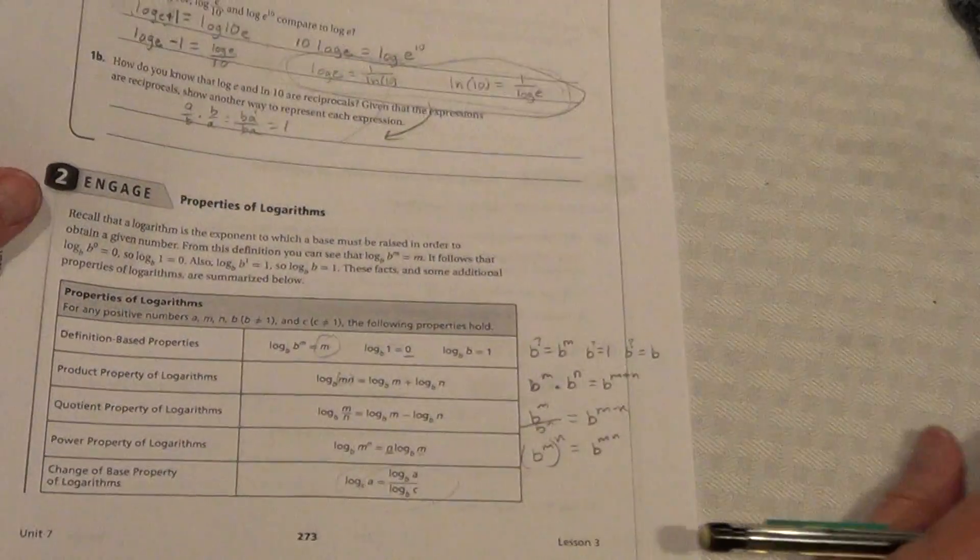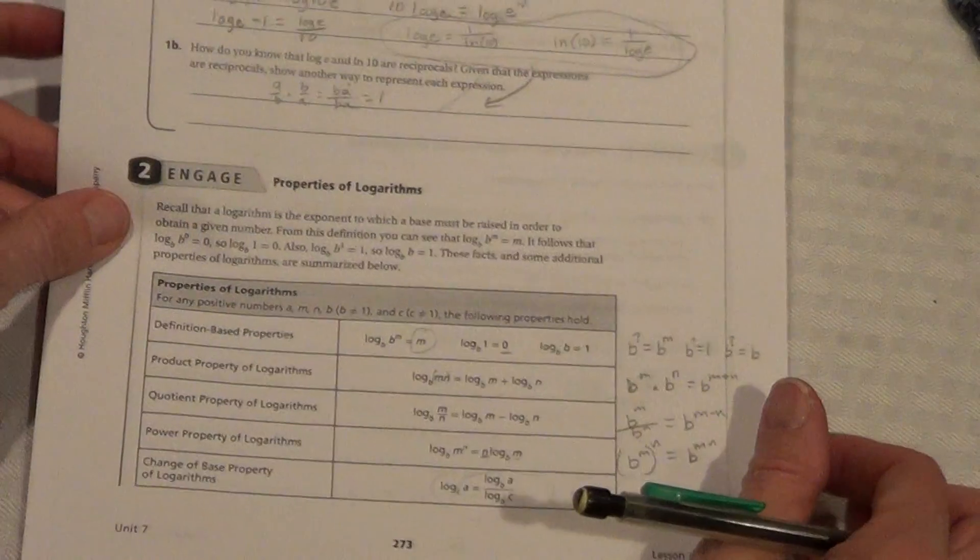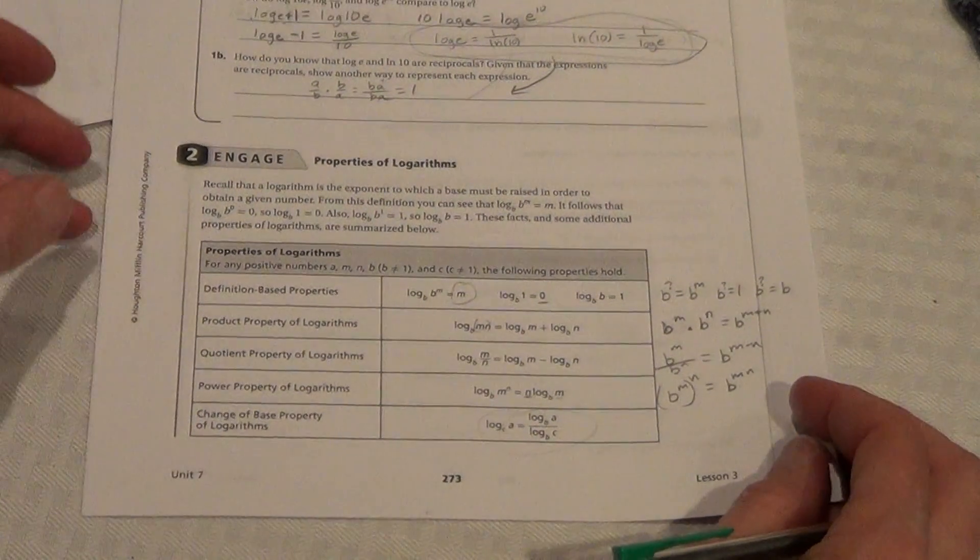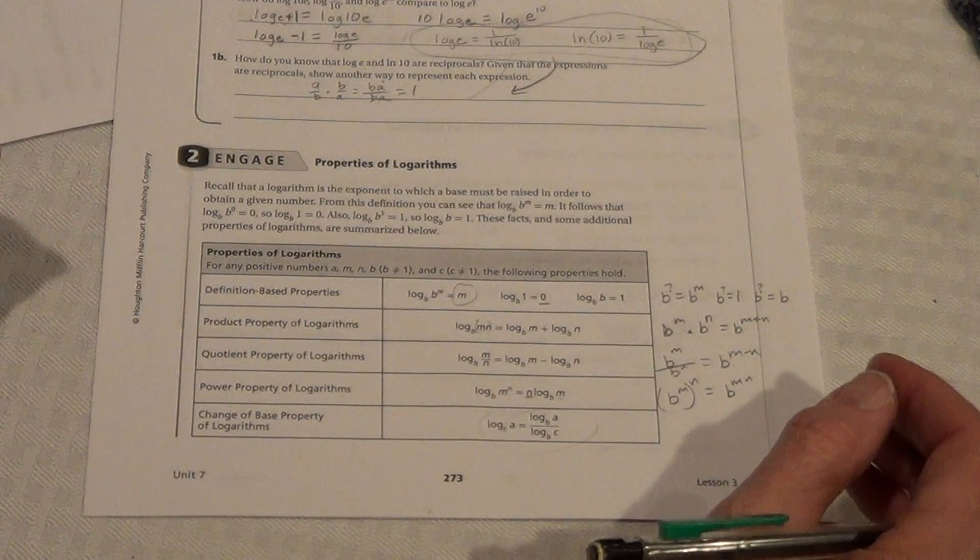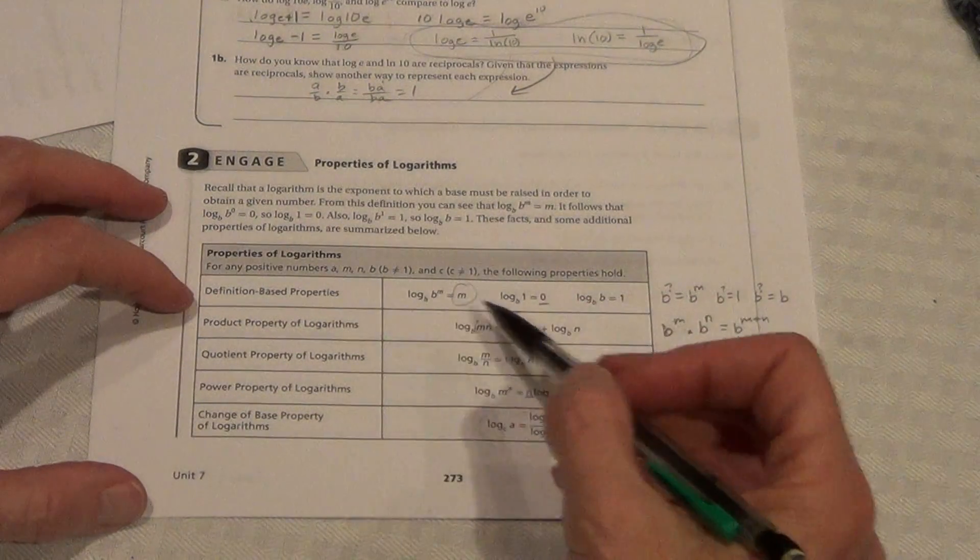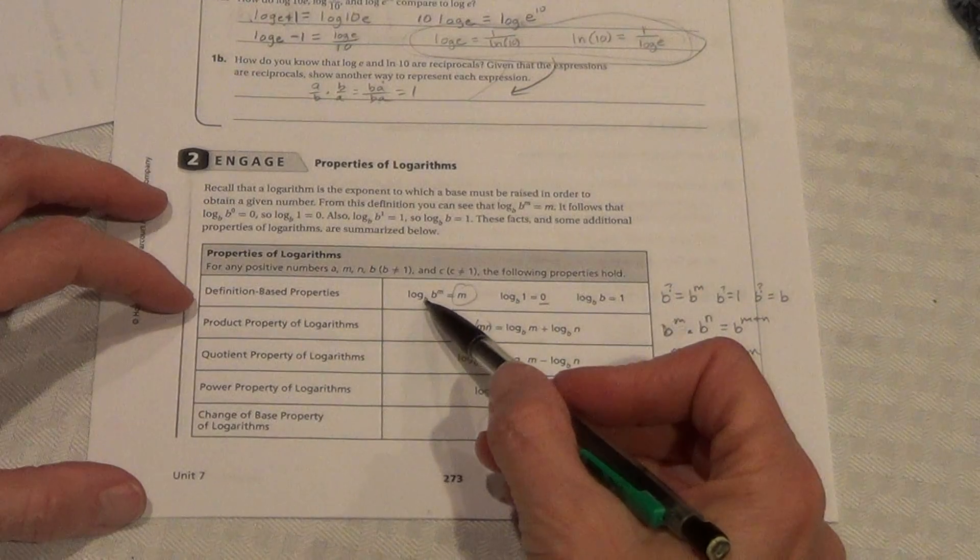Now, the next thing that we go through is that the properties of logarithms, remember, logarithms from lesson 1 are inverses of exponential functions. So, we go through their properties, and I just want to make sure that they make sense.